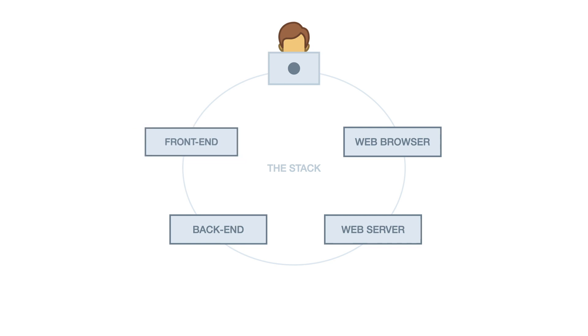The front-end of the stack is the code that runs inside the user's browser, and its job is to generate a user interface and handle the user's interaction with that interface. The back-end consists of web servers, databases, and third-party APIs — most things that have to do with processing data. The front-end and the back-end complement each other to generate a response to the user's actions.